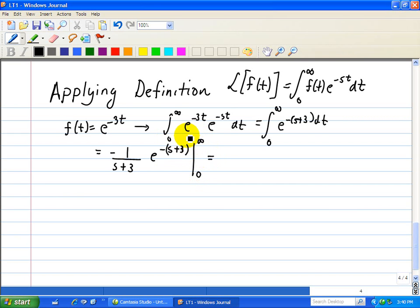Well, in this case, when you evaluate the upper limit, we have negative 1 over s plus 3, factor it out, and then when you put in the upper limit, that's just e to the minus infinity minus e to the zero.